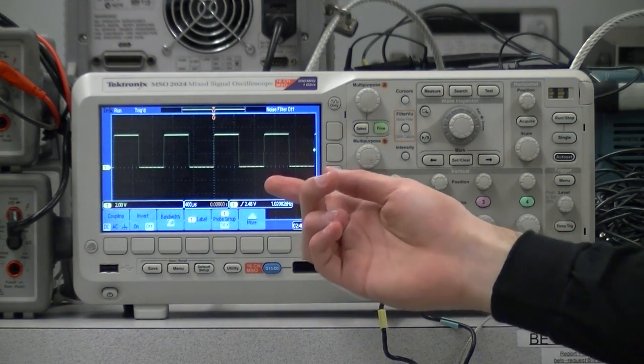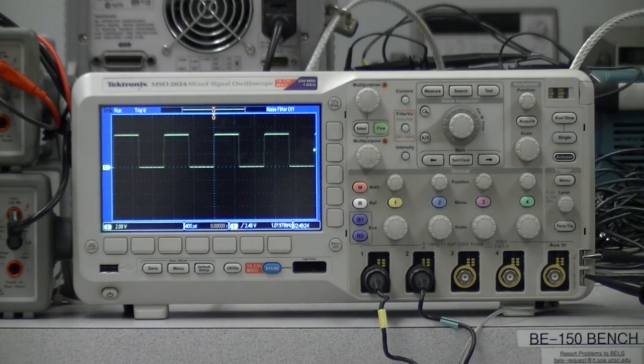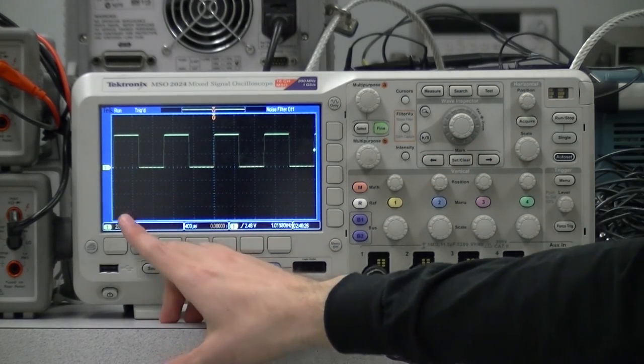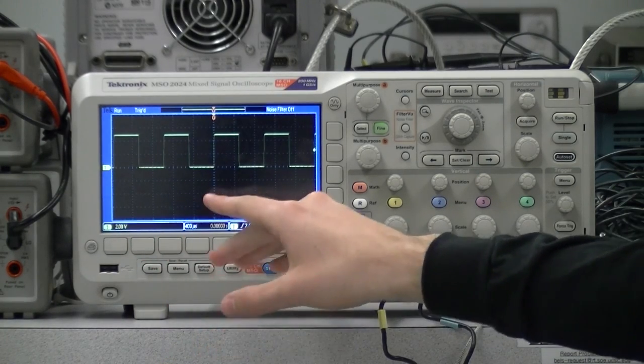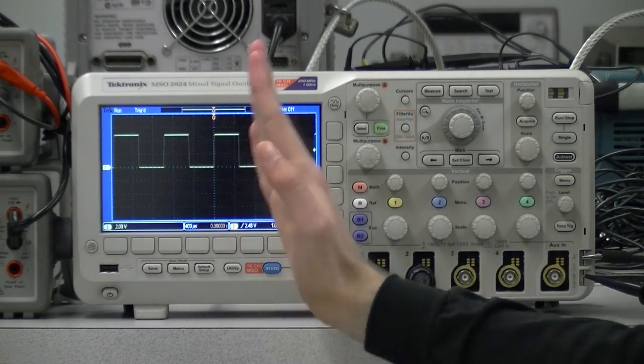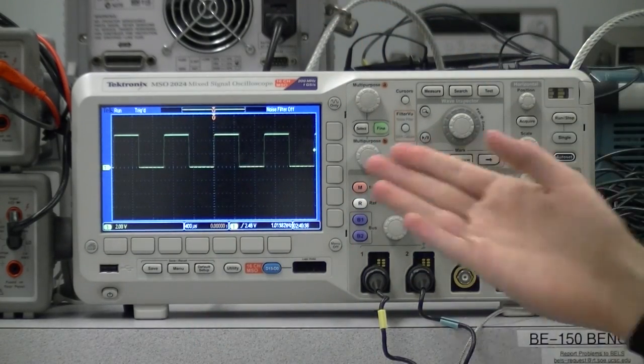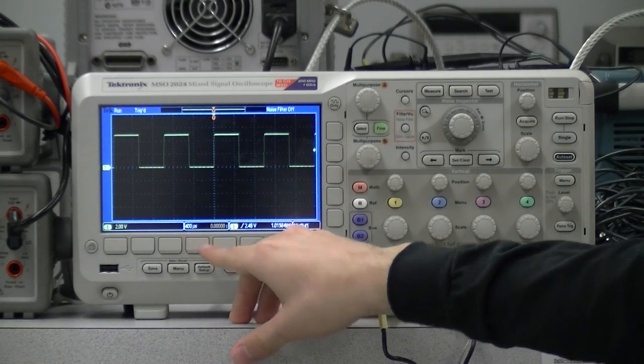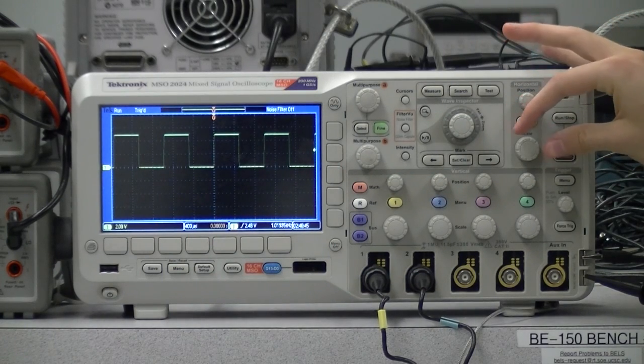We don't always want this menu open, so we can close it by pressing the menu off button here. Now, the voltage per division is still displayed here. The next number that is displayed is the amount of time per division, currently 400 microseconds. This is per horizontal division rather than per vertical division. Since this number will be the same for all channels, unlike possibly the voltage per division, we adjust it with a single knob here.